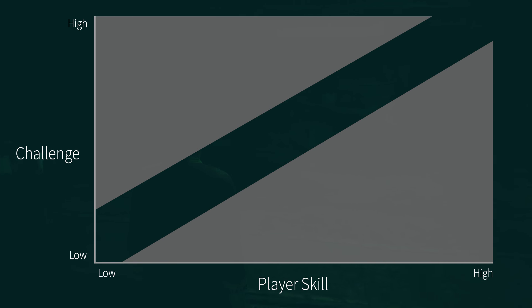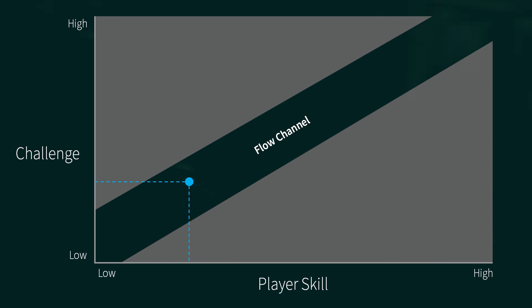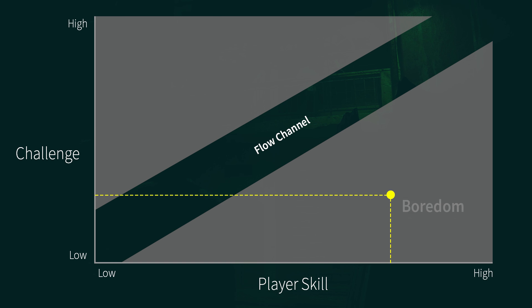This channel is known as the flow channel. The way we use this concept is: if the player has an amount of skill, we want to make a challenge that, when plotted on the graph, will land in the flow channel — a challenge that will put the player into a flow state. If we make a challenge too easy in comparison to the player's abilities, the player won't be engaged and will fall into this area of the chart. This zone is called boredom.